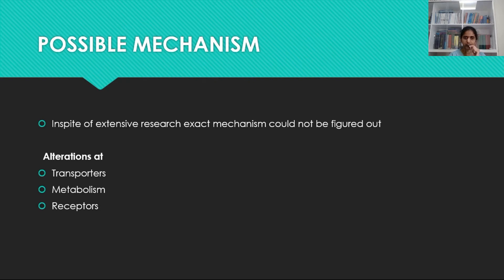What is the possible mechanism? In spite of extensive research, we could not figure out the exact mechanism behind this illness or behind this abnormal biochemistry. The proposed mechanisms suggest there can be alterations at different levels: at the level of transporters, at the level of metabolism of hormones in the cells, and at the level of receptors.